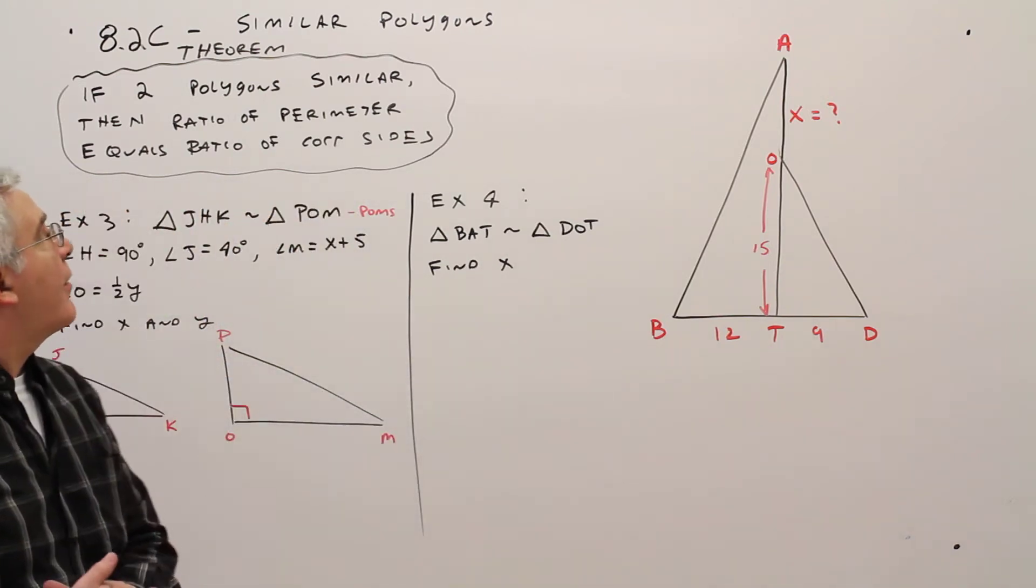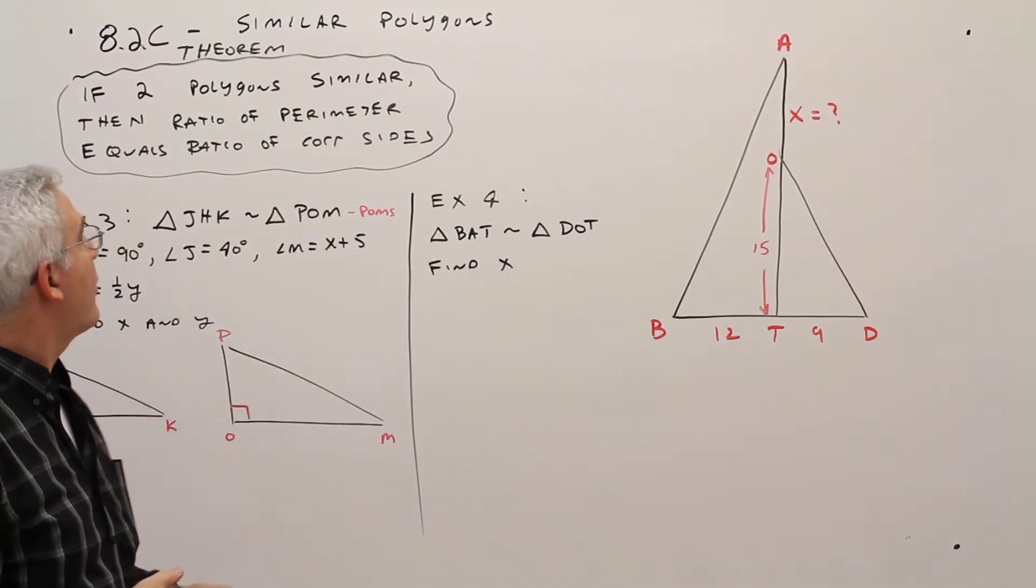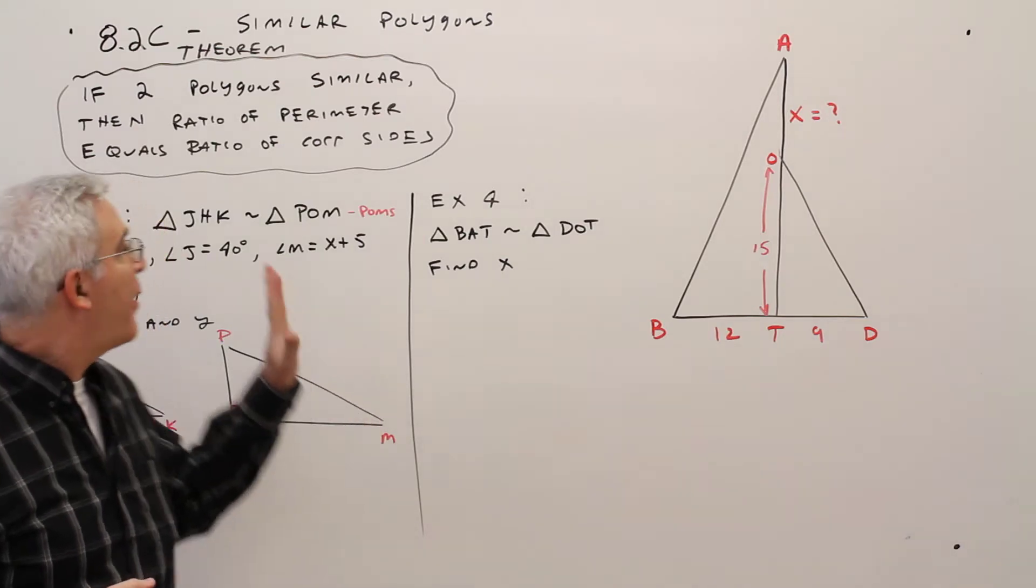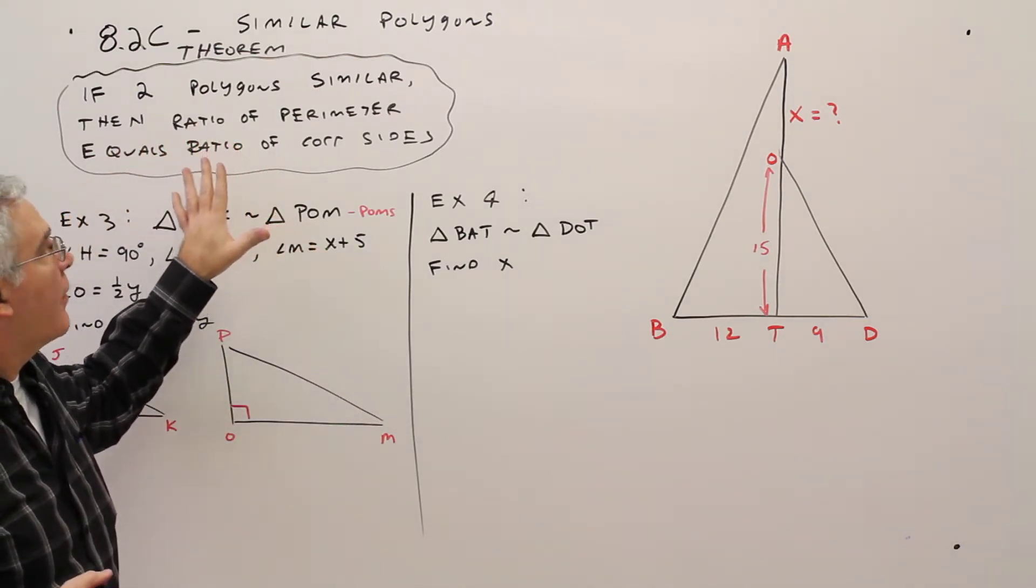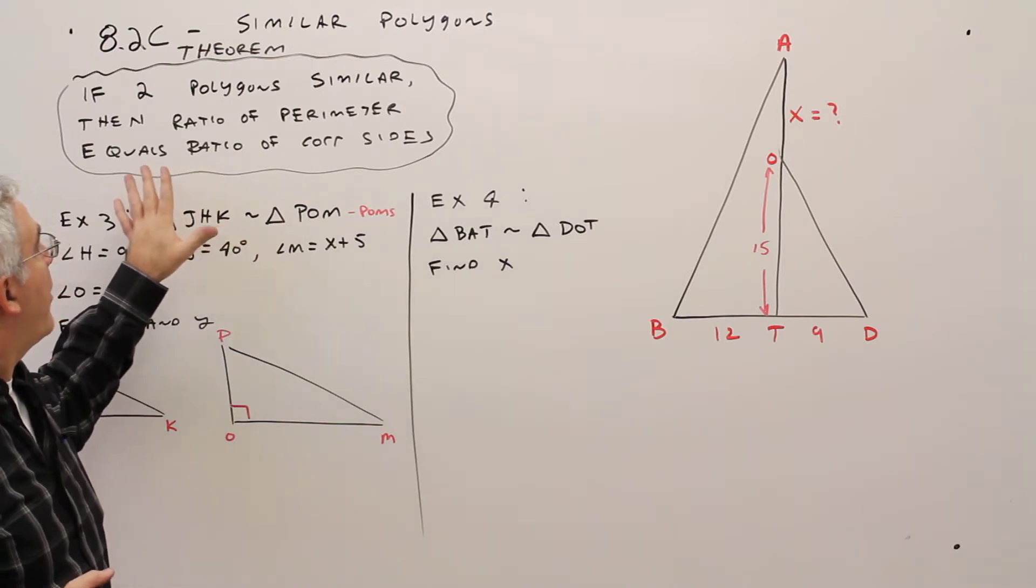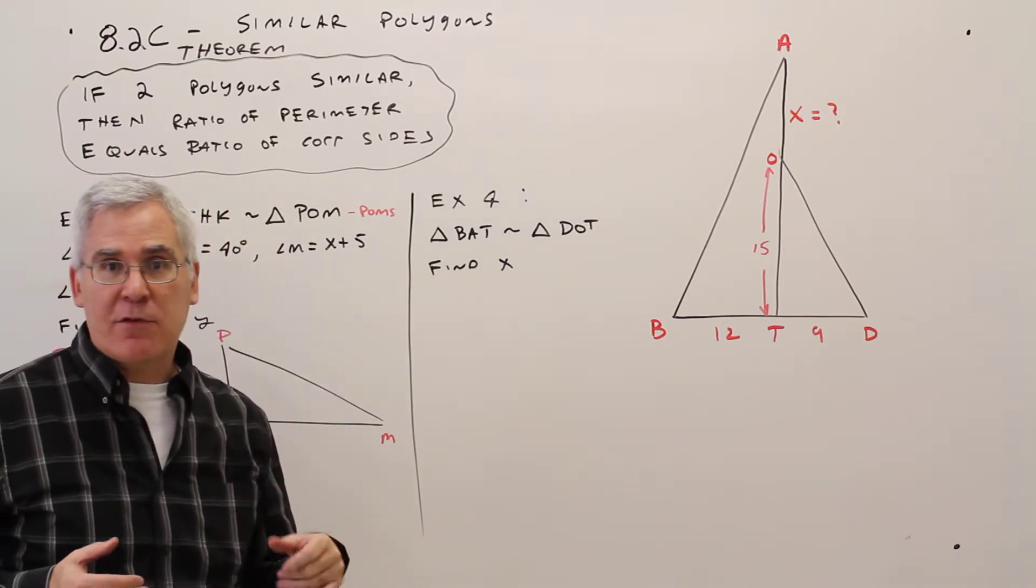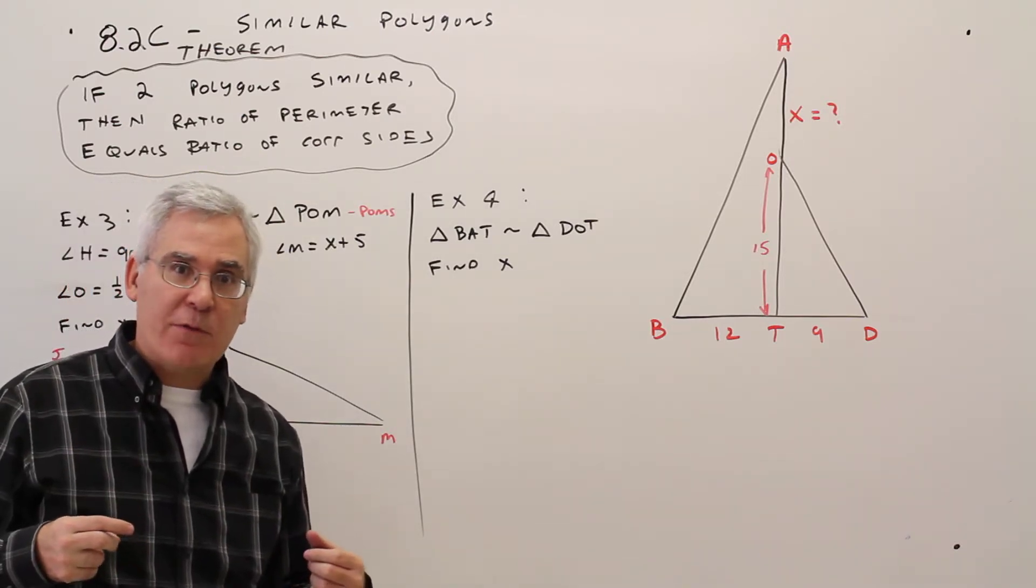Welcome to video 8.2C, Similar Polygons. So just following up in the last video, here's the theorem. If two polygons are similar, then the ratio of perimeter equals the ratio of the corresponding sides. So just cleaning up from the previous video.